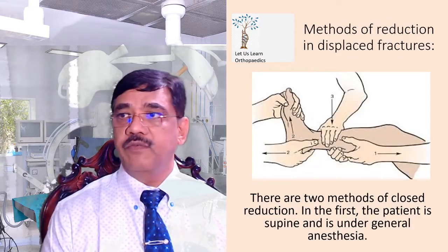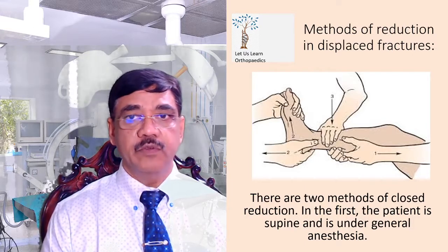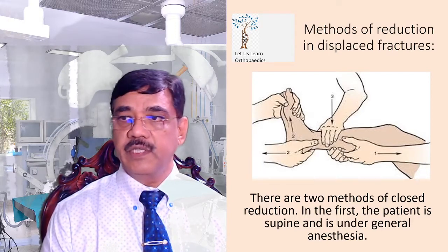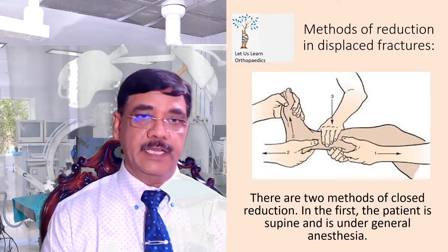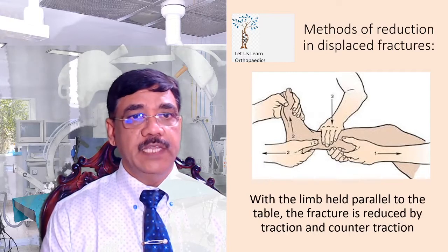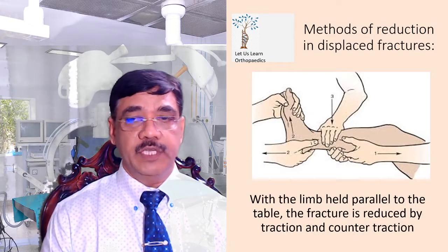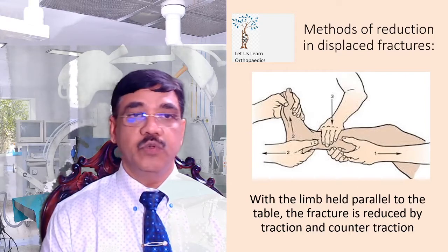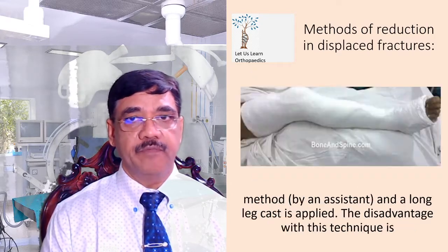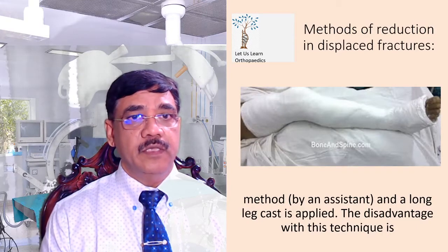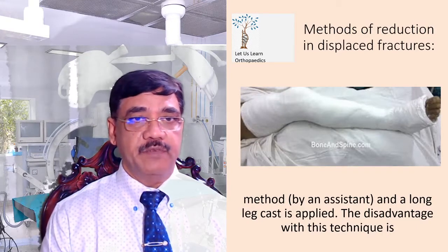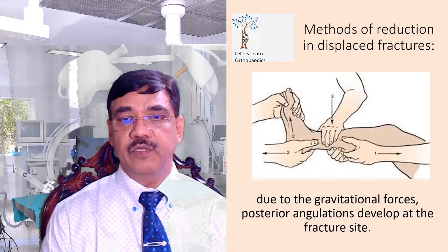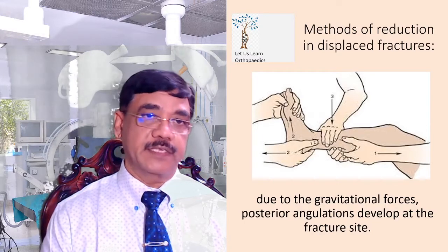The methods of closed reduction include two techniques. In the first, the patient is supine under general anesthesia, with the limb held parallel to the table, and the fracture is reduced by traction and counter-traction method. A long leg cast is applied after reduction. The disadvantage is that due to gravitational force, posterior angulation may develop at the fracture site.